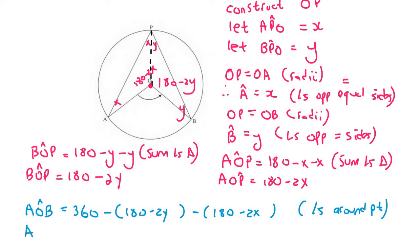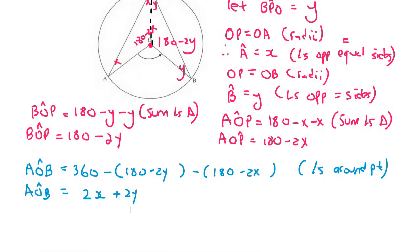And so if you had to eventually go calculate this, you would find that AOP is going to be equal to 2X plus 2Y. Because the 360 cancels the 180 and the 180. And then we can take out a common factor of 2. And then you're left with X plus Y.